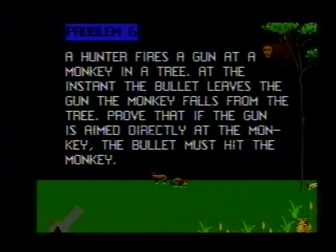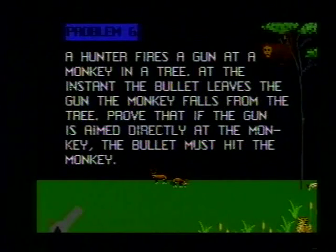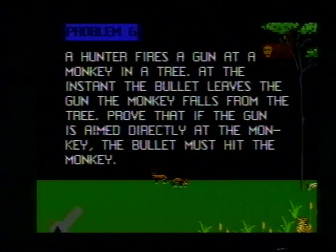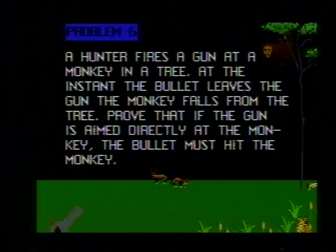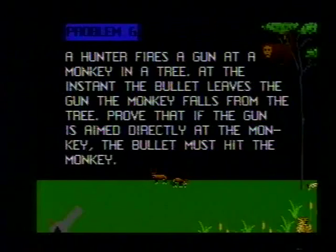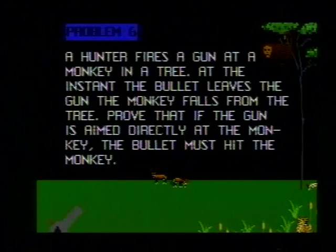Problem number six is a very famous physics problem. A hunter fires a gun at a monkey in a tree. At the instant the bullet leaves the gun, the monkey falls from the tree. Prove that if the gun is aimed directly at the monkey, the bullet must hit the monkey.